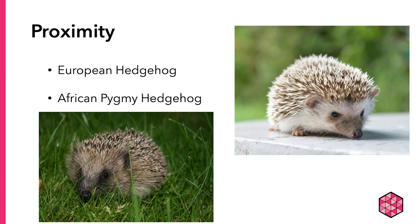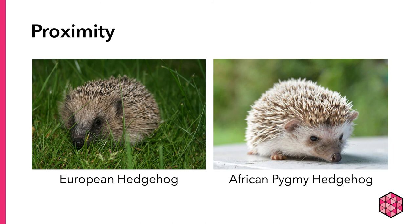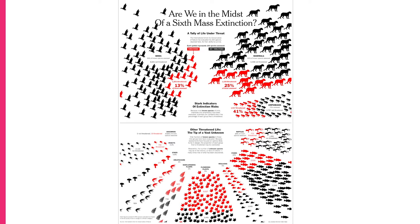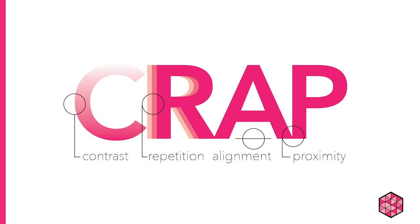Here's another example: unless you were an expert on hedgehogs, you probably wouldn't be able to tell which one is European versus which one is African Pygmy — they look very similar. This is an example of poor proximity. If you move the label of the type of hedgehog closer to the picture it represents, that communicates to the viewer much more easily which one is which. Looking once more at Bill Marsh's infographic, he uses proximity well to both distinguish between species — because there's space between each grouping — and to effectively caption each group by locating species identification and percentages close to or within the cluster of icons representing it. That wraps up CRAP — contrast, repetition, alignment, and proximity.